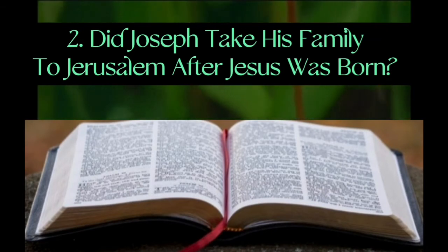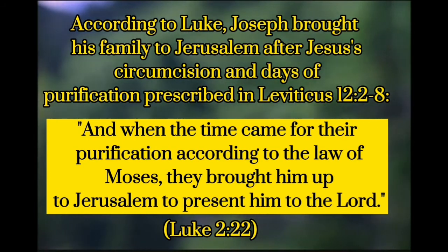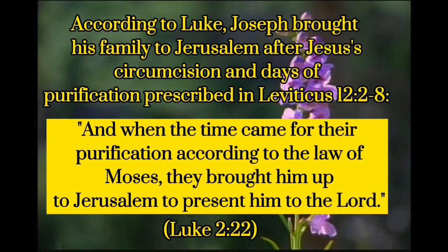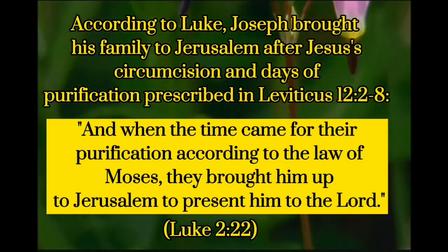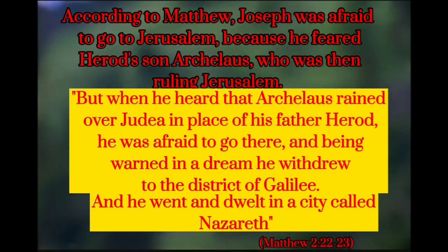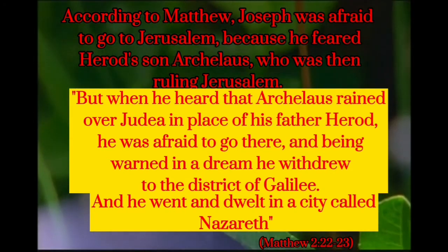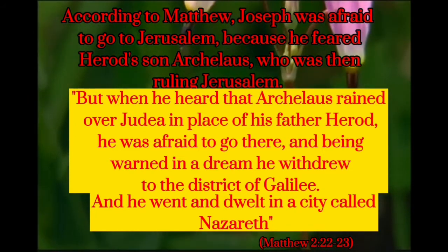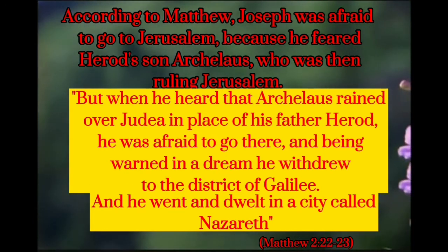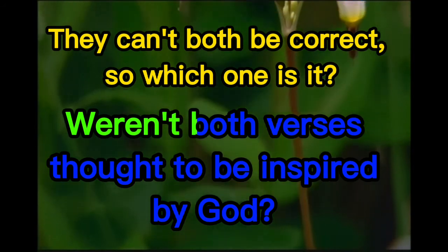Did Joseph take his family to Jerusalem after Jesus' circumcision and days of purification prescribed in Leviticus chapter 12 verses 2 to 8? Luke says yes: 'When the time came for their purification according to the law of Moses, they brought him up to Jerusalem to present him to the Lord.' Luke chapter 2 verse 22. Matthew says no — according to Matthew, Joseph was afraid to go to Jerusalem because he feared Herod's son Archelaus, who was then ruling Jerusalem. 'But when he heard that Archelaus reigned over Judea in place of his father Herod, he was afraid to go there, and being warned in a dream he withdrew to the district of Galilee, and he went and dwelt in a city called Nazareth.' Matthew chapter 2 verses 22 and 23. They can't both be correct, so which one is it? Weren't both verses thought to be inspired by God?